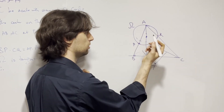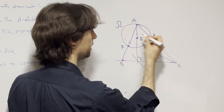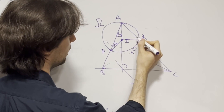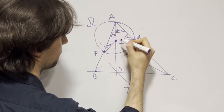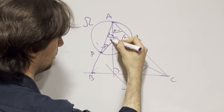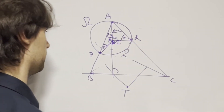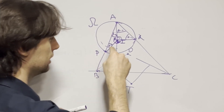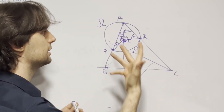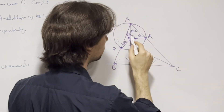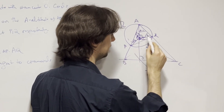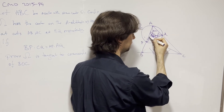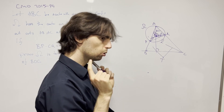Now let's see what the condition that the center is on the A-altitude implies. Call the center I. Then this angle is 90 minus beta, and this one is also 90 minus beta. This angle is 90 minus gamma, and this is also 90 minus gamma. So this arc is 2 gamma, this is 2 gamma, this is 2 times beta, and this one is 2 times alpha. Now for a point Q, it seems the angle PIQ is going to be 2 beta. So this is 90 minus alpha, this is 90 minus gamma, this is beta, and this is gamma.